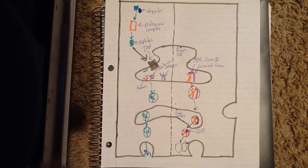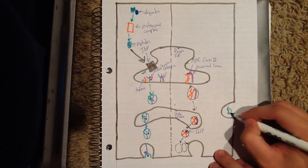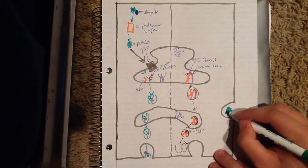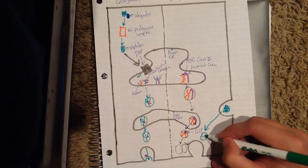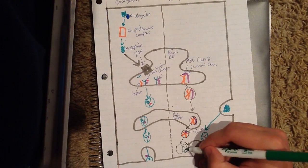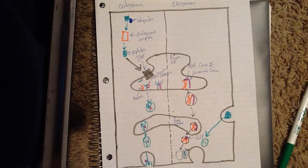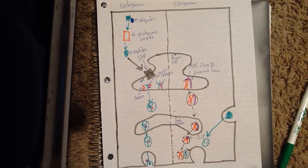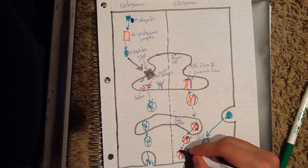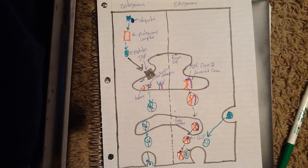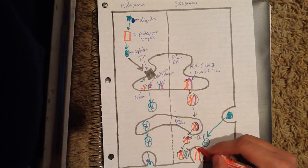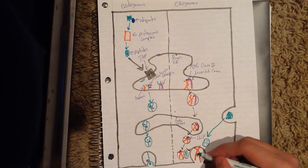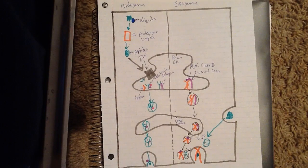Unlike the endogenous pathway, in the exogenous pathway the antigen is outside the cell and once brought inside, it's broken down into smaller peptides. These peptides meet up with the MHC class 2 molecule that has the CLIP piece attached. The MHC class 2 molecule then trades the CLIP piece for these peptides, resulting in the MHC molecule expressing the peptide on the outside of the cell and losing CLIP in the process.